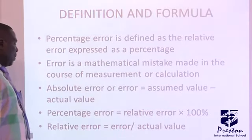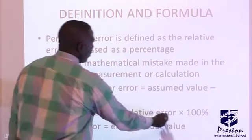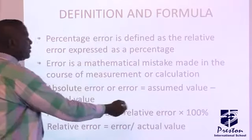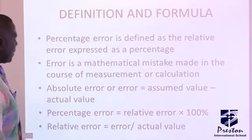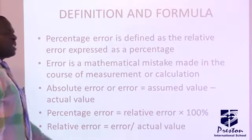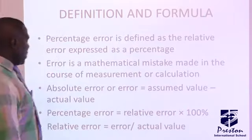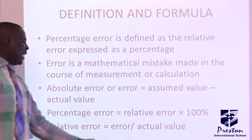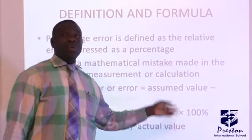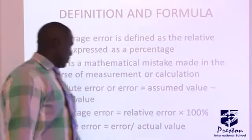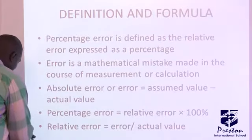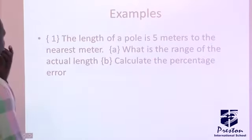We also have the formula for percentage error. The percentage error is relative error multiplied by 100. But you need to get your relative error from error over actual value. So from there, I can say percentage error is error over actual value multiplied by 100.